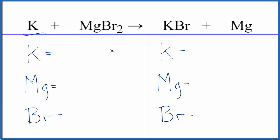The type of reaction here, this is a single displacement reaction. The potassium is replacing the magnesium. So the magnesium is all by itself, and now the potassium is bonded to the bromine. Type of reaction, single displacement.